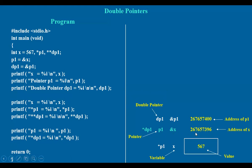This value can be obtained like — as we obtained here — p1 is an address, and the variable value is obtained with the help of star p1. Similarly, this is dp1, and its value can be obtained with the help of star dp1.